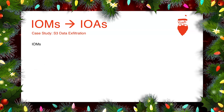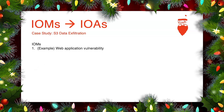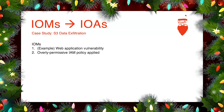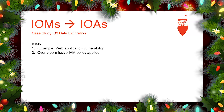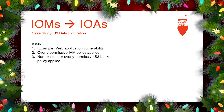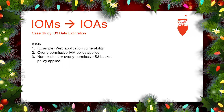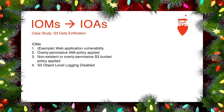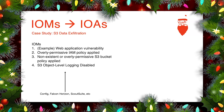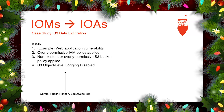In this scenario, both IOMs and IOAs are applicable. The keys were originally compromised through a web application vulnerability — that's an IOM on its own. Then there's an overly permissive IAM policy that allowed the user to enumerate and exfiltrate S3 objects and change bucket permissions. There's also a non-existent or overly permissive S3 bucket policy. And S3 object-level logging was disabled, so some logs from this attack pattern were missed. These are the kinds of things that AWS Config, Falcon Horizon, and Scout Suite detect and assist with remediation.